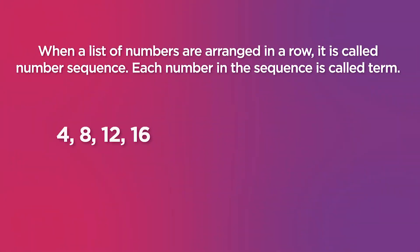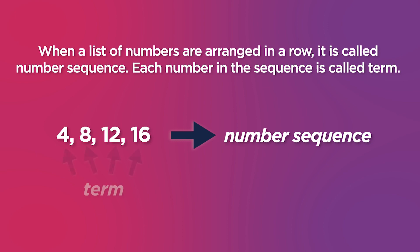Kids, when a list of numbers are arranged in a row, it is called a number sequence. Each number in the sequence is called a term. For example, 4, 8, 12, and 16 is the number sequence, and each of those numbers are the terms.